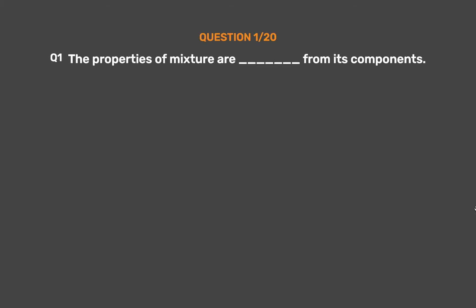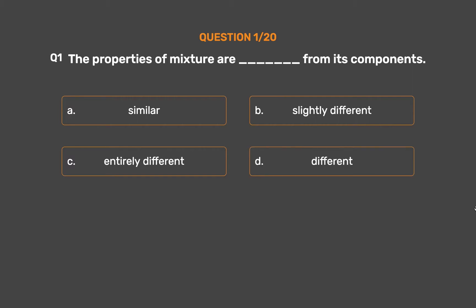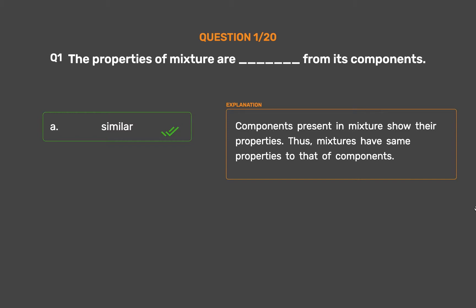Question number 1. The properties of a mixture are ______ from its components. Option A: Similar. Option B: Slightly different. Option C: Entirely different. Option D: Different. The correct answer is Option A: Similar. Components present in a mixture show their own properties. Thus, mixtures have the same properties as their components.